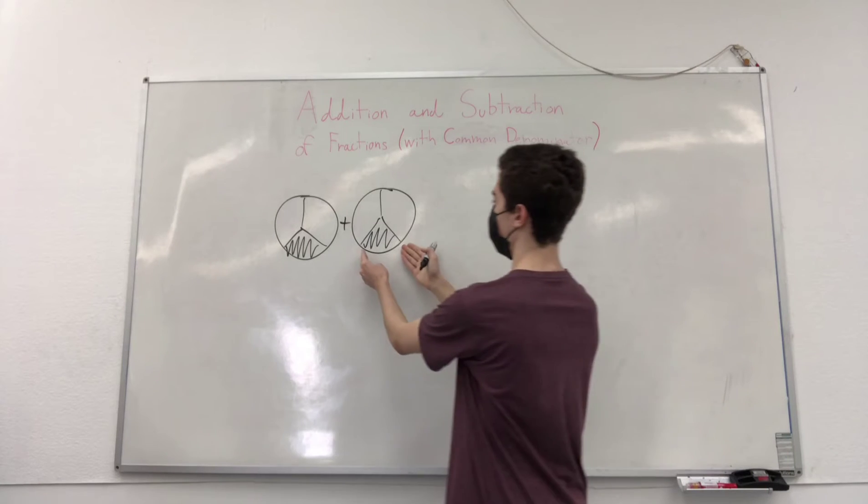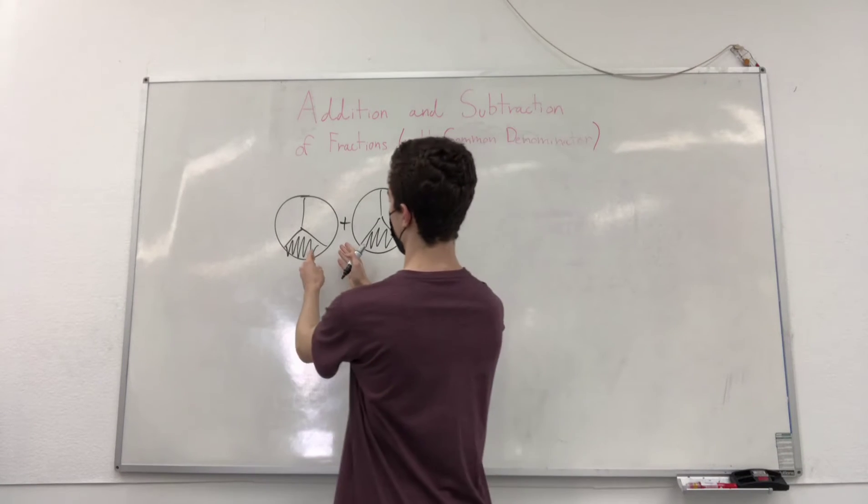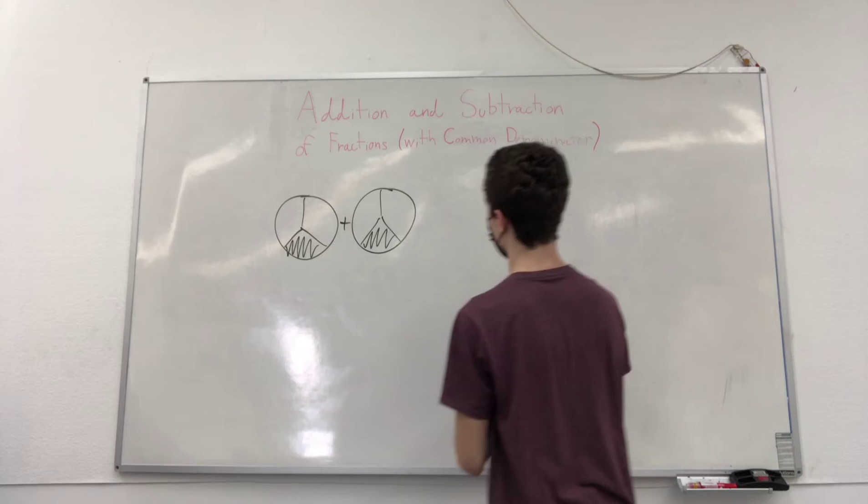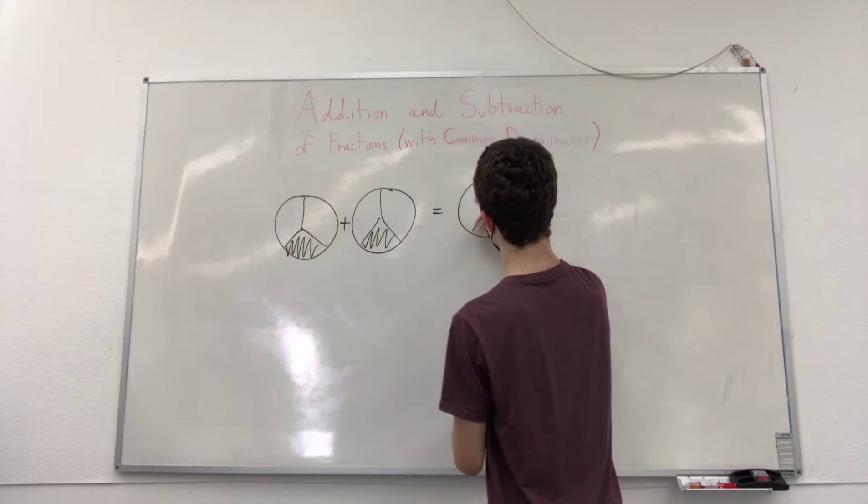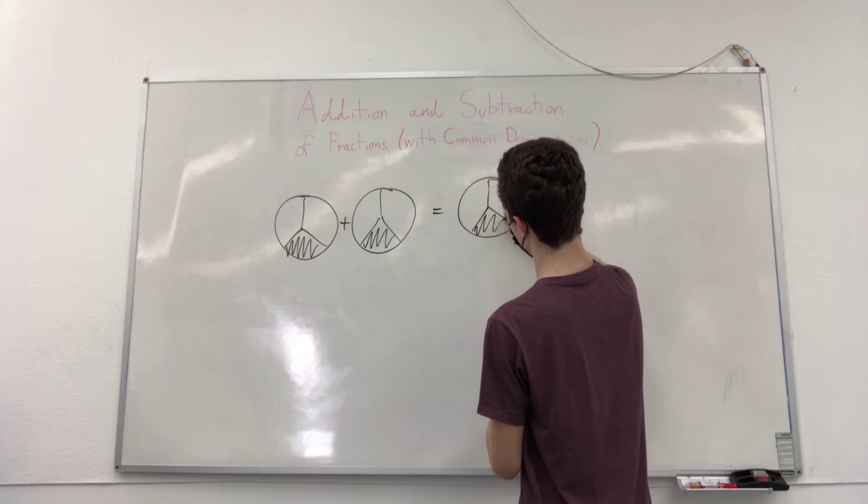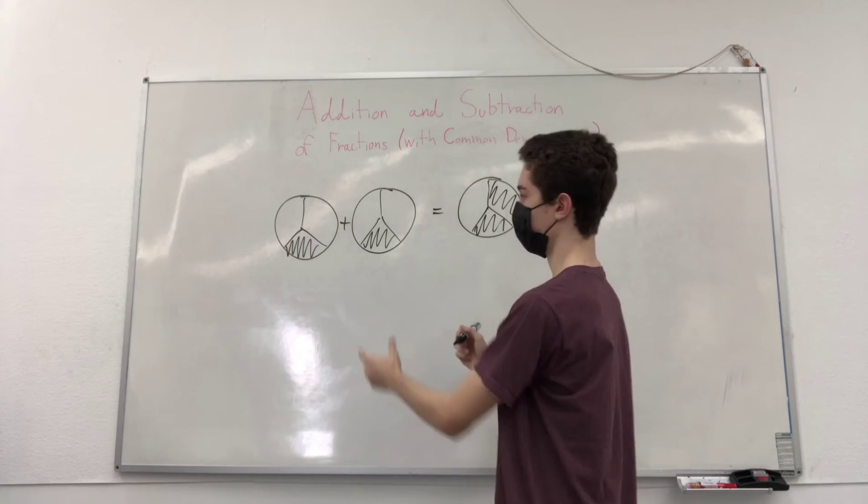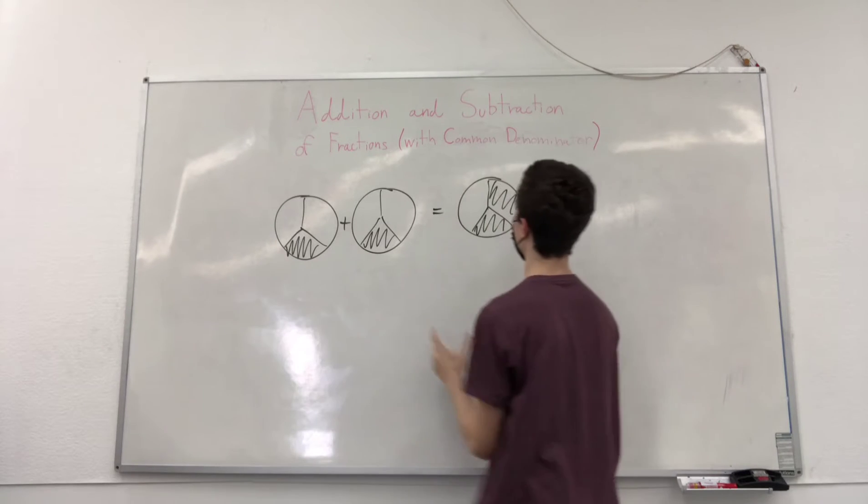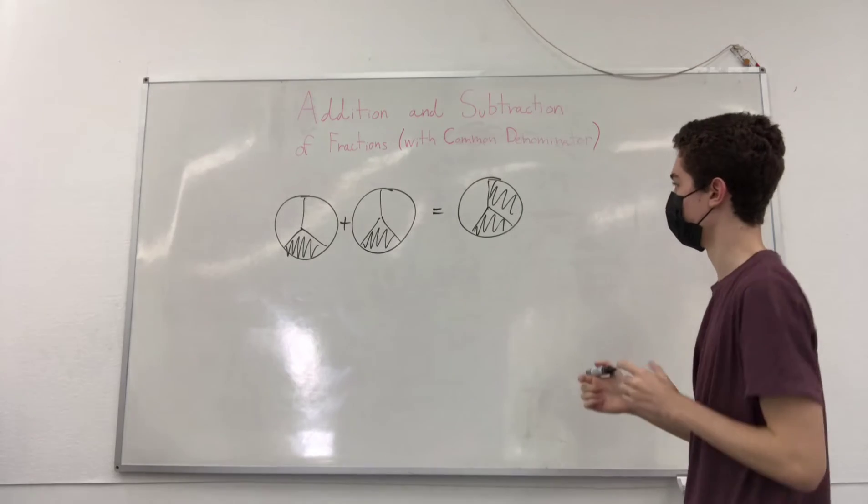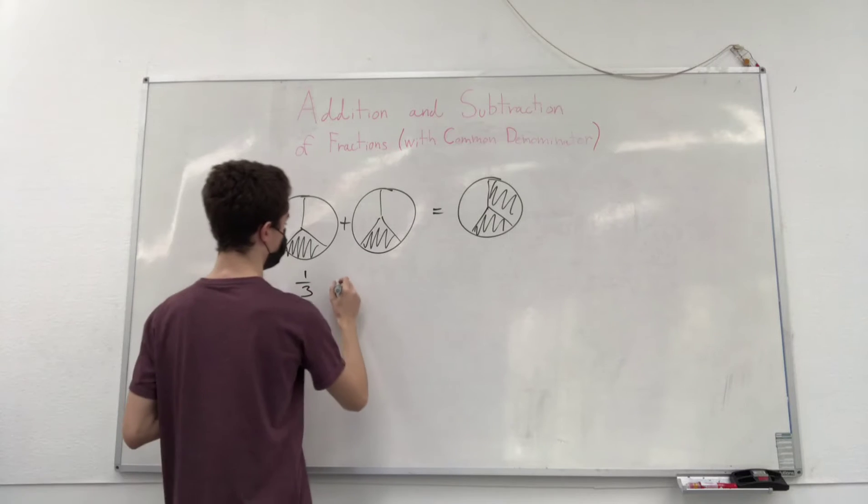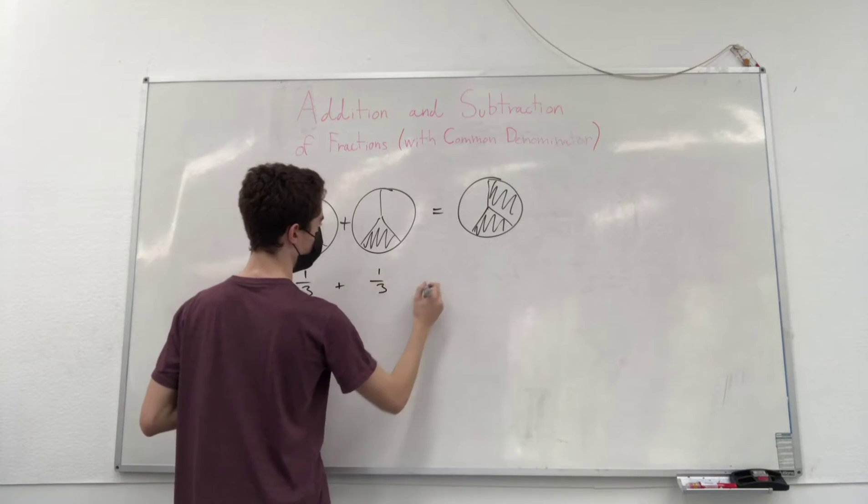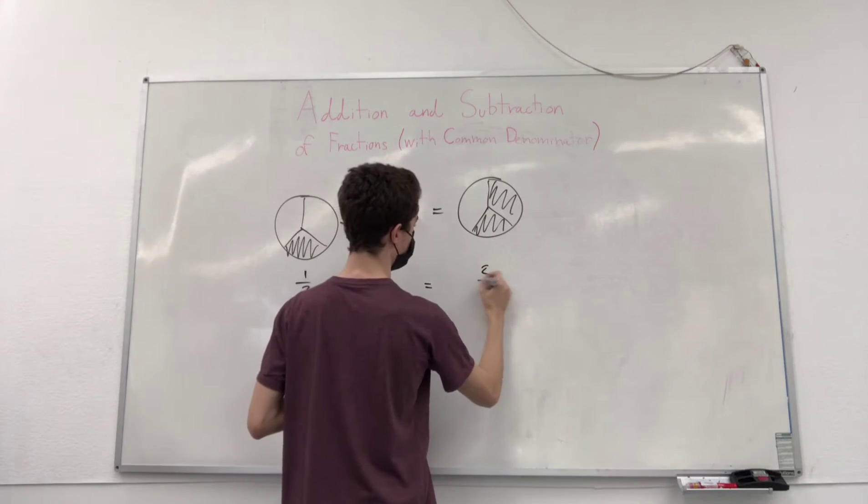Well, if you take one third of this pizza and bring it to this pizza, you would have as a result two thirds of the pizza, right? Get this together with this, you have two thirds of the pizza. And this, if you were to write that, you would write one third plus one third equals two thirds.